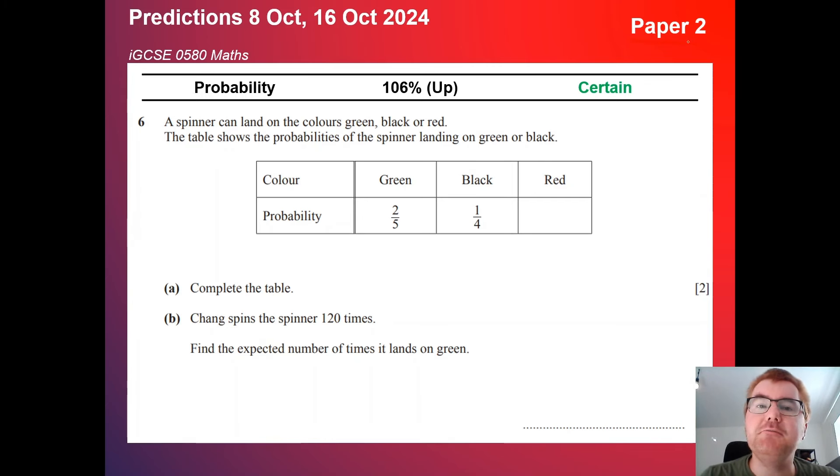Let's go straight into my paper 2 predictions here and the first thing we're going to look at is probability. It is up here 106%. Probability has always been a big topic and it does sort of fluctuate between that almost certain and certain category. Now this question 6 here is a very typical question using probability in a table and then using this idea of expected probability. The alternative is a more difficult question towards the end of the paper where you have to use some kind of tree diagram. It usually oscillates between one and the other.